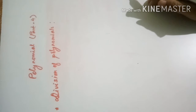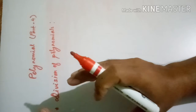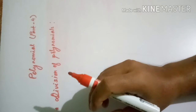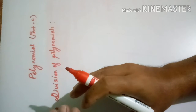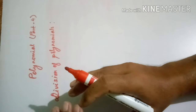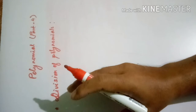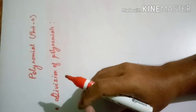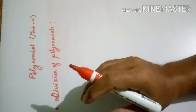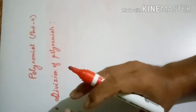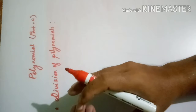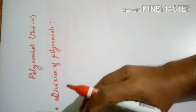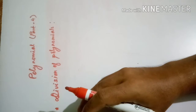We are doing division of polynomials in one variable. There are two very important steps here. The first step is writing in the standard form — whatever polynomial is given, we must write it in standard form. The second step is finding the degree, and determining which polynomial is the dividend and which is the divisor.